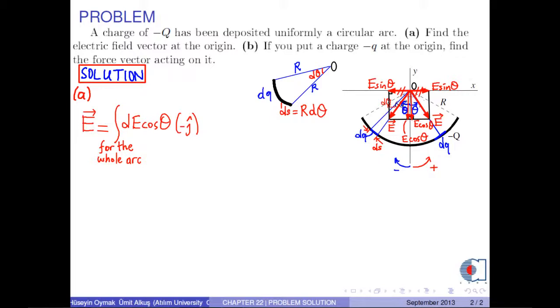dE is calculated by the formula k times dq over r squared. And because k and r squared are constant, they can be taken outside the integral sign. So, we are left with negative k over r squared integral of dq times cosθ j hat.